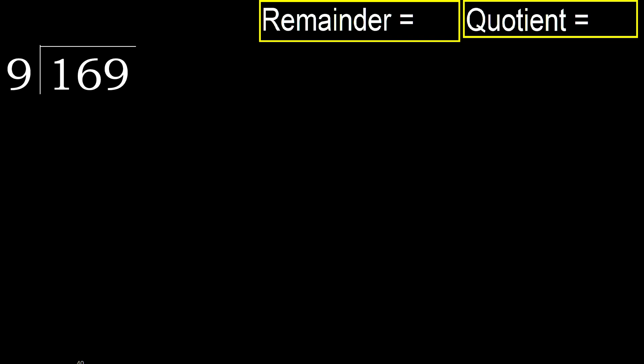169 divided by 9. 1 is less, therefore next. 16 is not less, therefore we work with 16. 9 multiplied by which number is nearest to 16, but not greater?